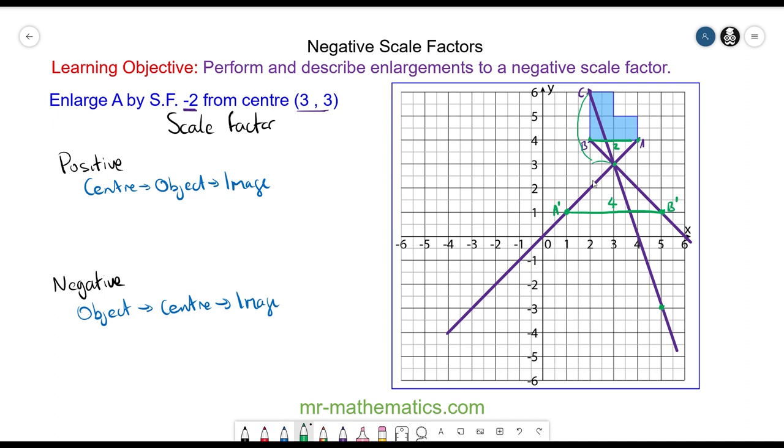From B to C we can recreate this edge where this is C dash and then I can recreate the object into our enlarged image.